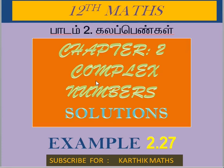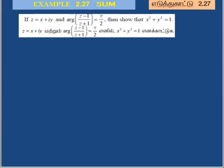Welcome. This is example 2.27. If Z equals X plus iY, and the argument of (Z minus 1) divided by (Z plus 1) equals π/2, then show that X squared plus Y squared equals 1.